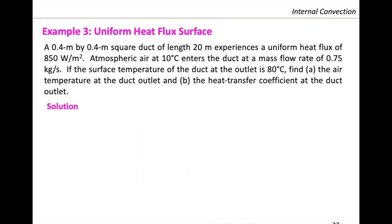Let's solve an example for a uniform heat flux surface. We have a 0.4 m by 0.4 m square duct of length 20 meters experiencing a uniform heat flux of 850 W/m². Atmospheric air at 10°C enters the duct at a mass flow rate of 0.75 kg/s. The surface temperature at the outlet is 80°C. We need to find the air temperature at the duct outlet and the heat transfer coefficient at the outlet.